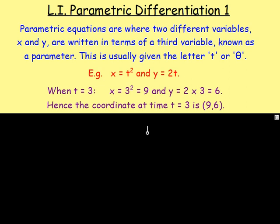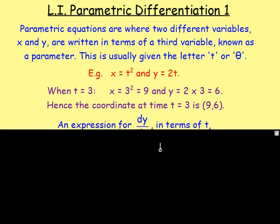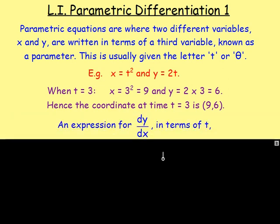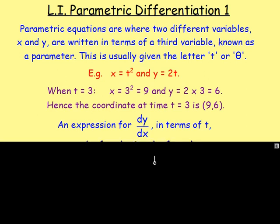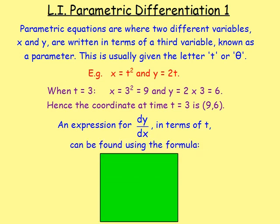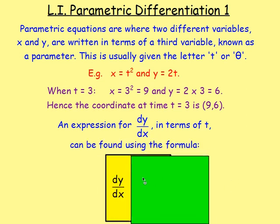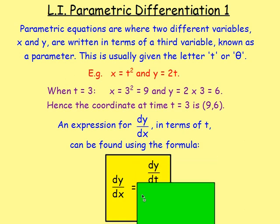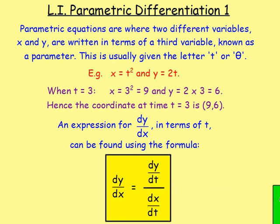To find the derivative — to differentiate and get dy/dx in terms of t — if we have x and y written in terms of t, we can use the formula: dy/dx equals dy/dt divided by dx/dt.